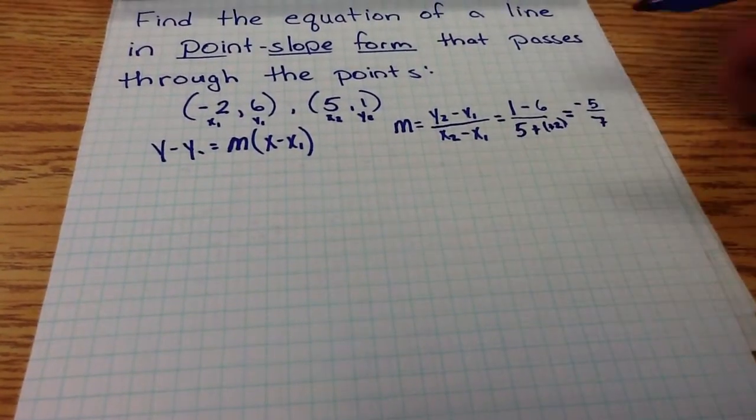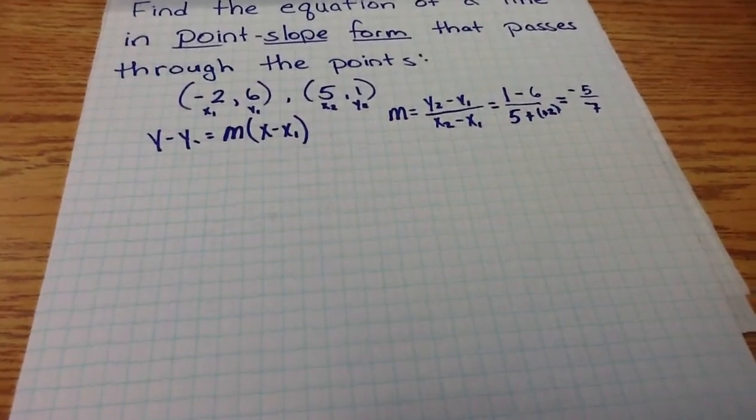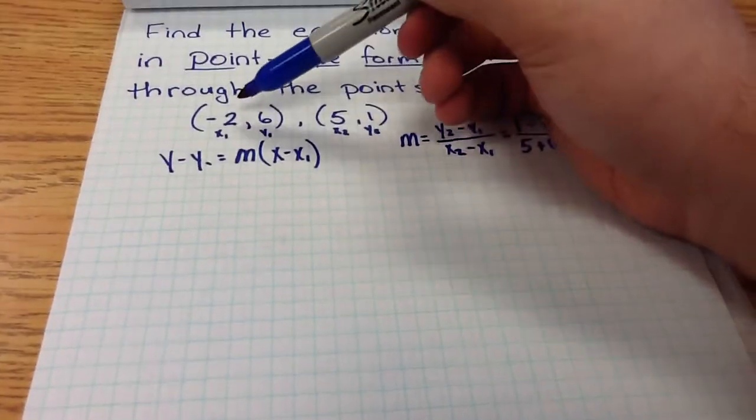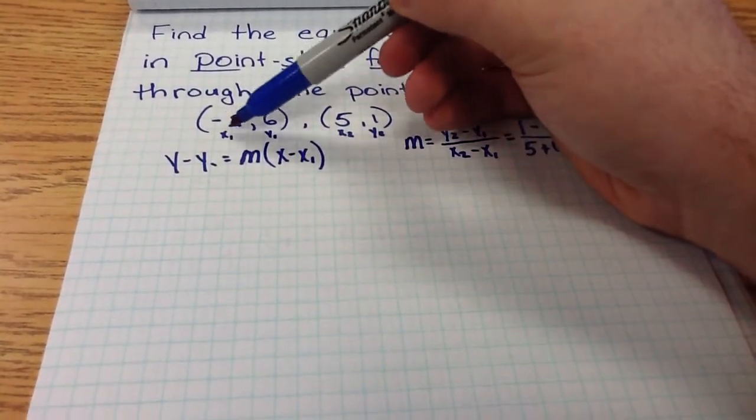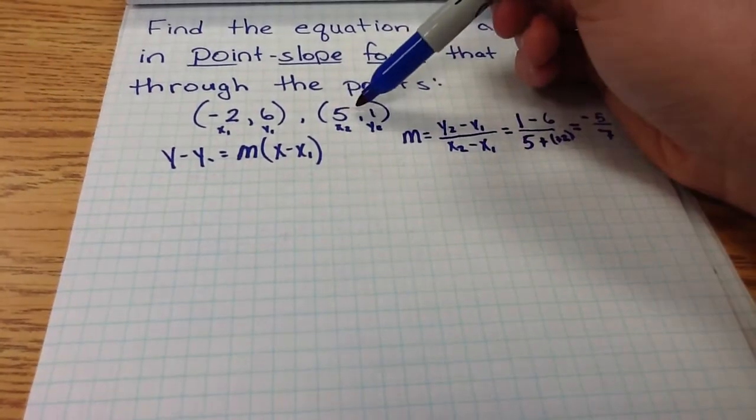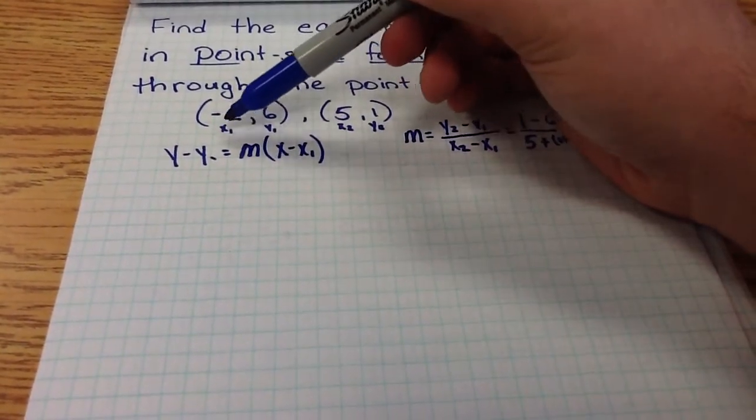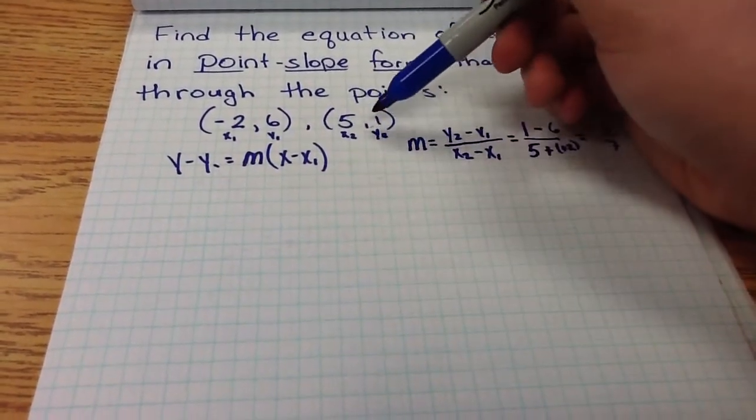So to solve this problem, the last step is to simply plug in all of our information. I'm going to use this first point to illustrate what we do with a negative coordinate. I could simply use the positive ones, but I do want to illustrate what we do with a negative, so I'll choose the first point, although it would be easier to choose the second point.